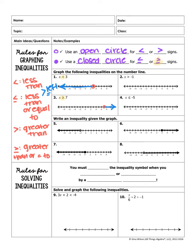For number 5, we write an inequality given a graph. First, identify what number your circle is on — I can see it's at negative 2. Then look at which way your arrow is facing. Remember: if it's less than, the arrow will be left; if it's greater than, the arrow will be pointing to the right. My arrow is pointing to the left, so I have a less than symbol. And since the circle is open, that confirms less than. So the answer is x is less than negative 2.